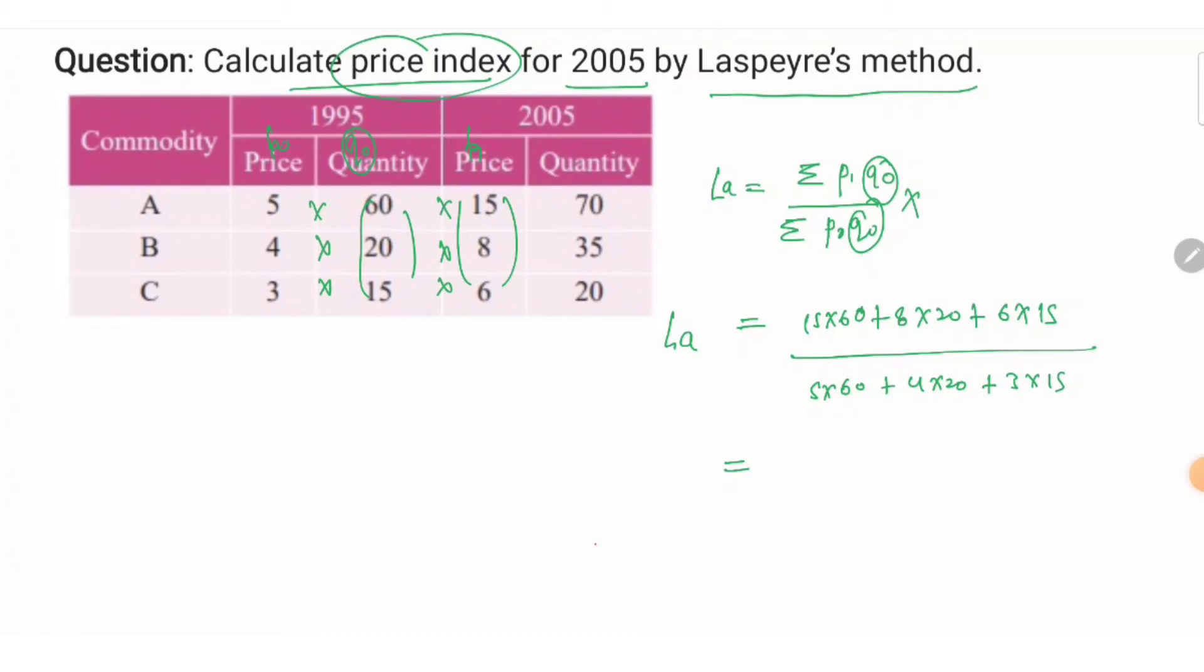Now if we solve this we get 15 into 60 will be 900 plus 160 plus 90, and it will be 300 plus 80 plus 45. So we get 1150 divided by 425, and if we solve this, this will be 2.7. So we can say that the Laspeyres price index for 2005 is 2.7.